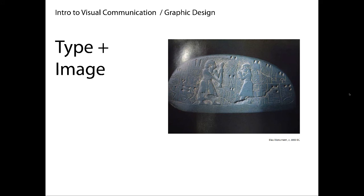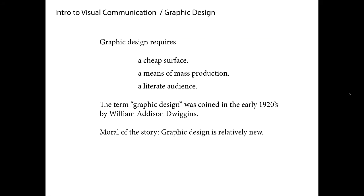The earliest known artifact where type and image were put together is called the Blau Monument, from 3000 BC. This is the earliest piece of advertising we know of. What's interesting is this object was related to a storehouse for wheat or grain — it's not a religious artifact. Type and image were combined here for commercial purposes. The word 'graphic design' is actually not that old — it was coined in the early 1920s by William Addison Dwiggins, an American designer.